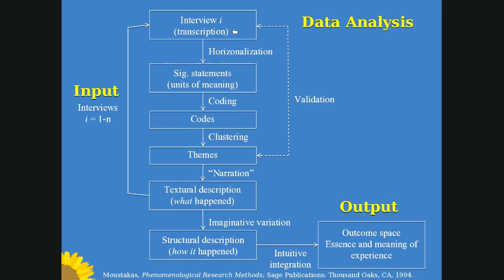One thing we do differently from what Moustakas proposes is that we work in a group. For this study I'll discuss later, we had five researchers — three undergraduates, a grad student, and myself. Each one of us would go through the first steps individually, then we would get together, examine the codes and themes, and come to a shared code book for the first interview. Once we had that, we would go through a process called narration to create a textural description — a narrative that describes what happened in the experience — and then take each subsequent interview through the same process.